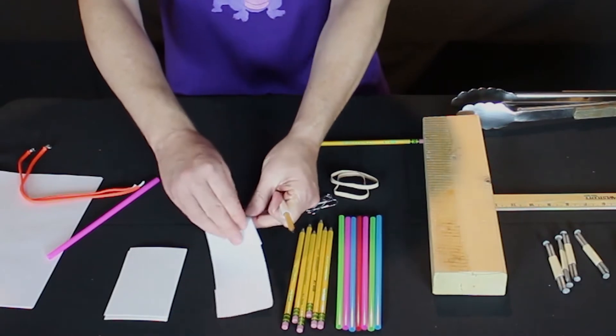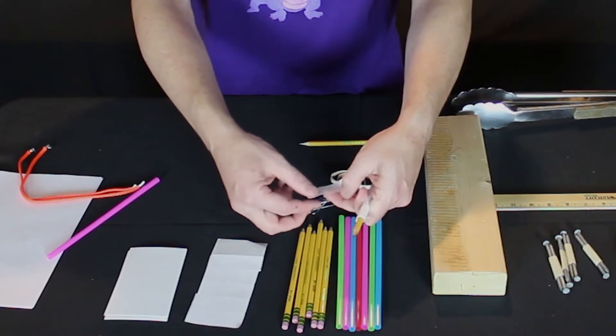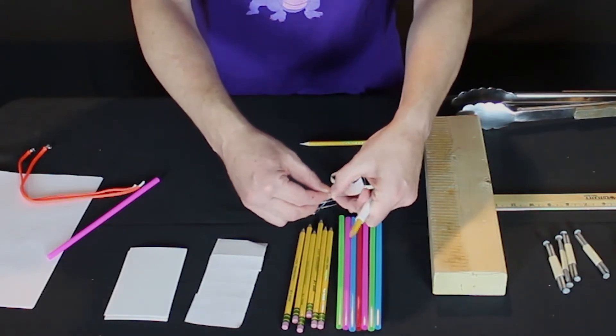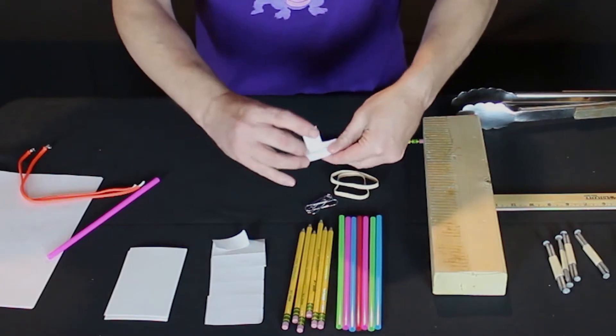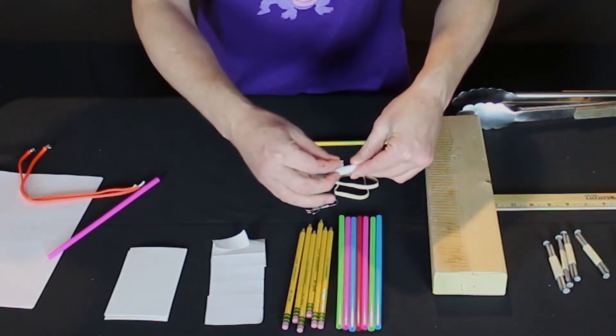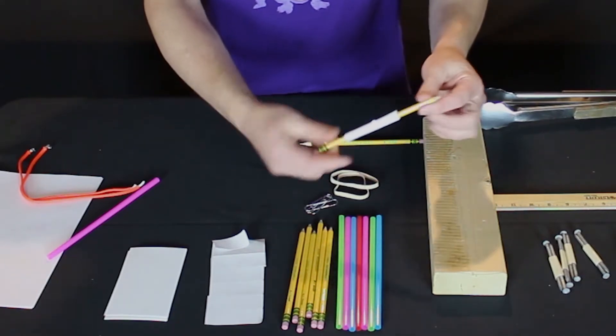We're going to take one of our mailing labels. This time we're going to rip it into thirds or right around thirds. We're going to take one piece to tape that together like so.